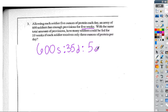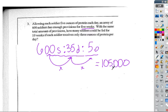Okay, so first you have to find the total number of ounces, so you have to multiply them all together. Multiply, multiply, and you get 105,000 ounces of protein for 35 days.